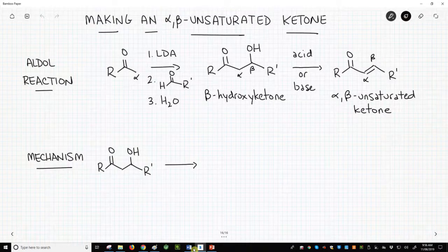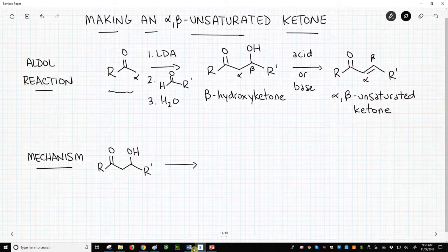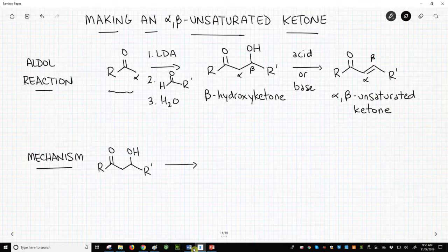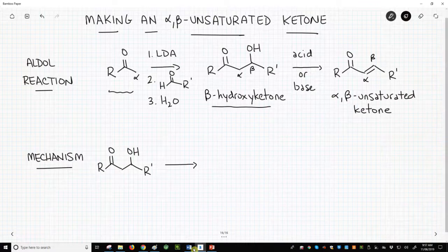At the top of the screen is a typical aldol reaction. The process starts with a ketone. Step 1 is making the enolate with LDA. Step 2 is adding an aldehyde to get a tetrahedral intermediate. Step 3 is protonation with water to form the beta-hydroxyketone.